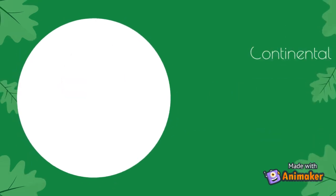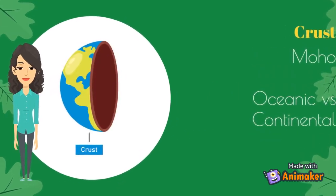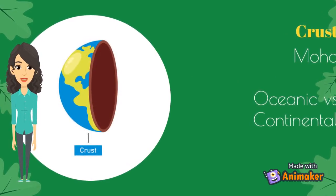The base of the crust is called the Moho. Oceanic crust is thin and observed in ophiolites. From the bottom to the top, it consists of mantle peridotite, gabbro, dykes, basaltic lavas, and sedimentary rocks.